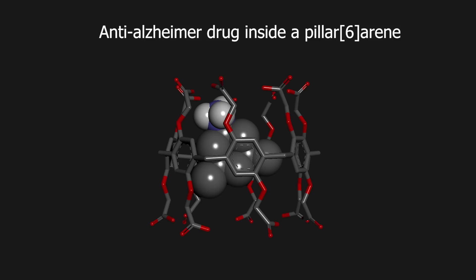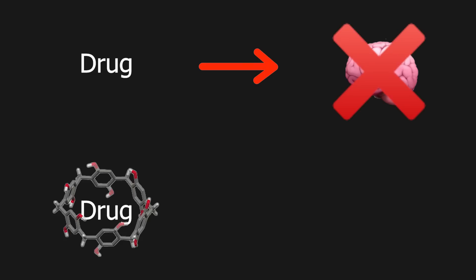Potentially pillar-6-arenes can be bound to drugs that have a larger structure and can then be used to deliver the drug in places it normally wouldn't be able to go. For example, a drug alone could be unable to pass the blood-brain barrier and therefore be ineffective. But when bound to a pillar-arene, they can.